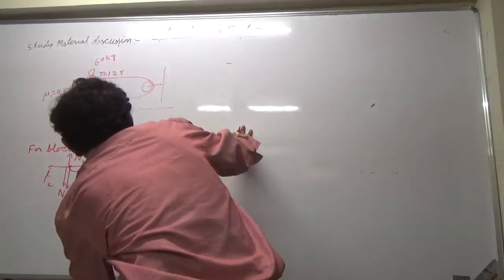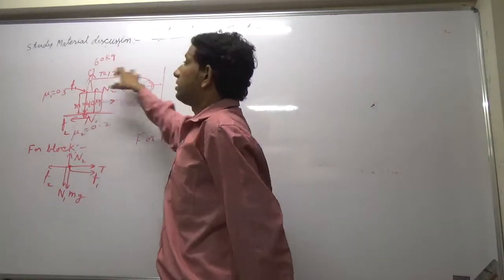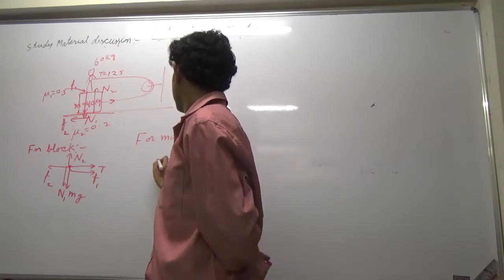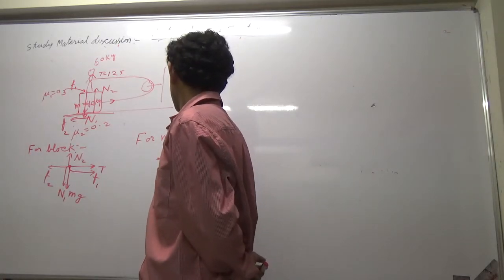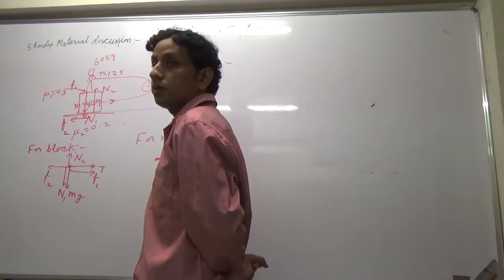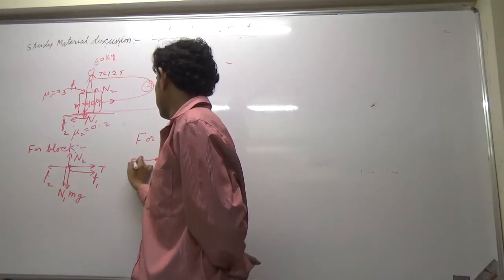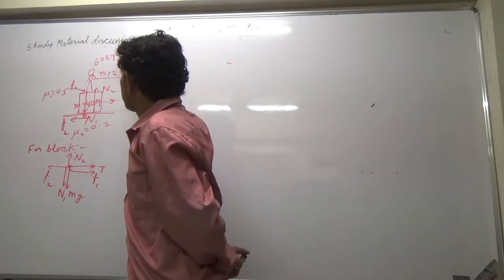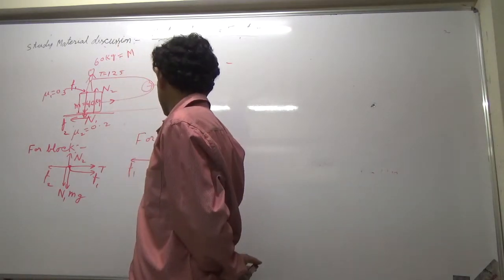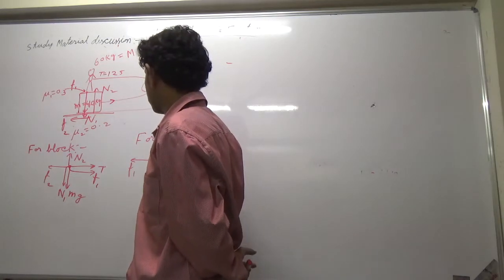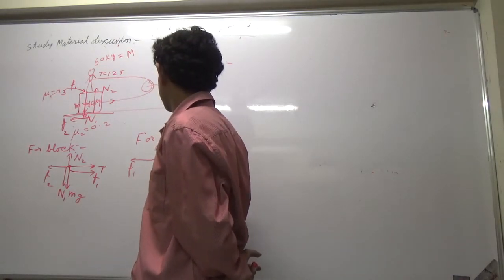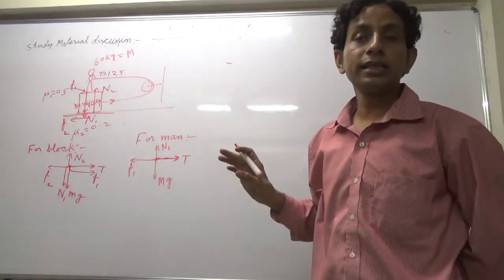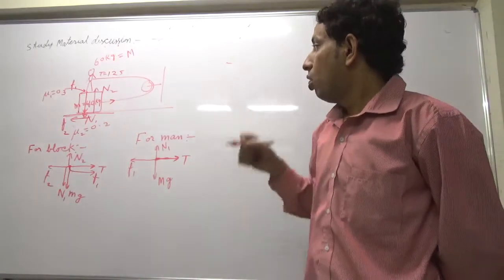And for man, if we write: For man, tension is this side, and friction backward F1, and capital Mg, mass of man, and the normal force N1. These are the forces.